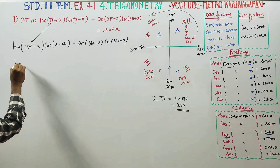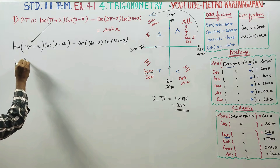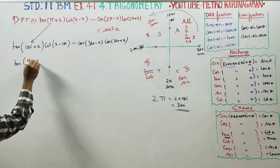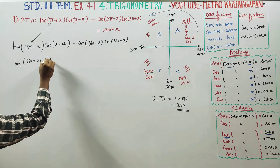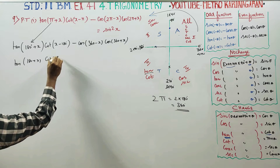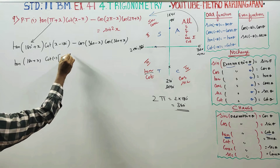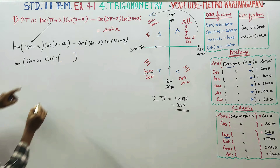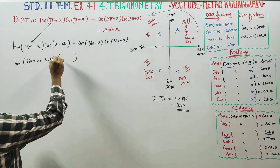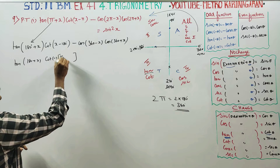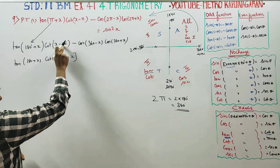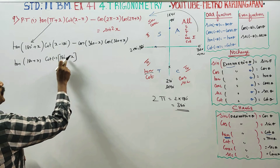tan. 180 minus x gives cot. 1 minus, 1 minus, 1 minus. 180 minus x.